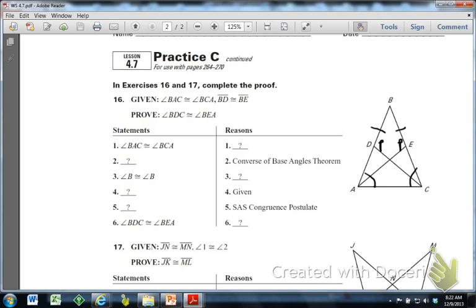And to me, it looks like the two triangles that would be maybe congruent would be this one and that one. So those two triangles will be the ones we're trying to prove congruent.